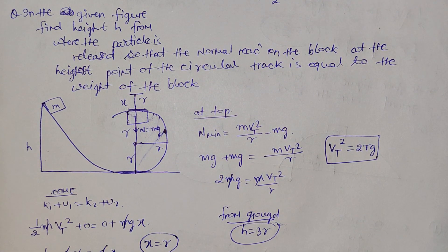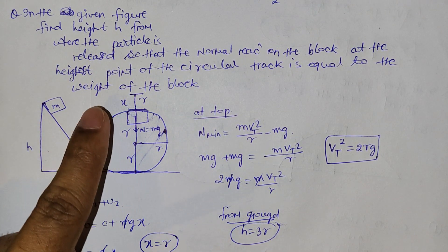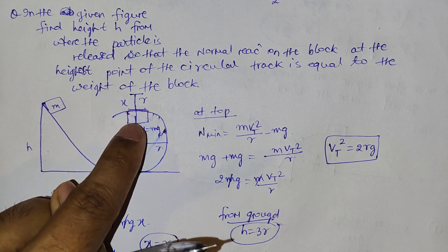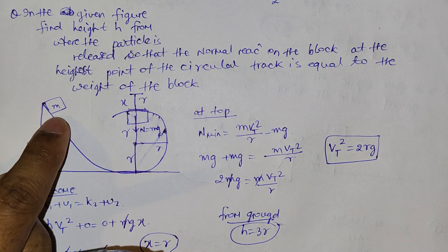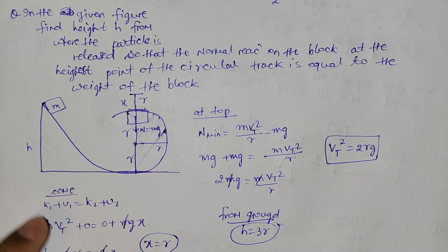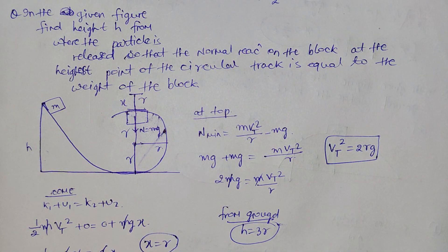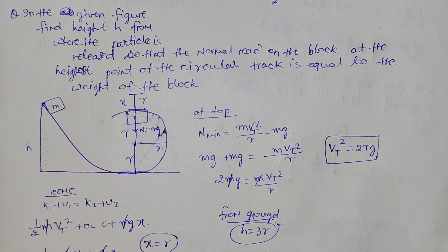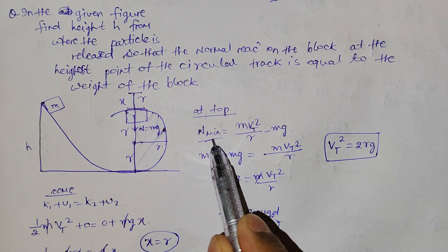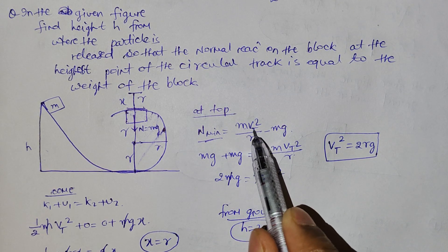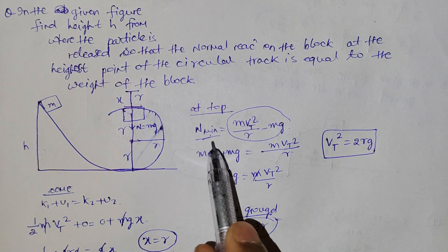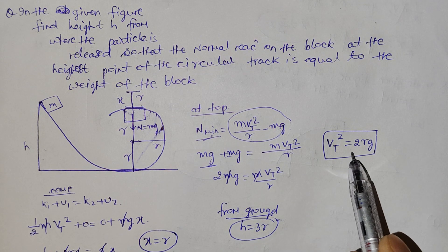Next question: a particle of mass M is released from some height. The normal reaction equals the weight Mg. At the top in vertical circular motion, normal force is minimum (analogous to minimum tension with a string). At the top: N_min = mv_top² / r - mg, and N_min = mg. So putting N = mg: mg = mv_top² / r - mg, which gives velocity at top = root(2rg).